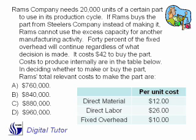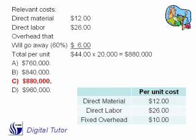Here's a new one — freeze your frame and work it. Your relevant costs are the ones that are going to go away — they're going to change in the future: the material, the labor, and the overhead that's going to go away. So the relevant costs here are going to be $44 per unit times the number of units.